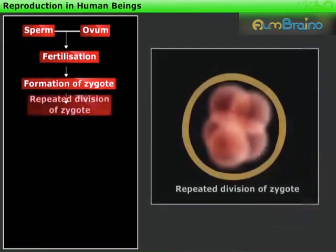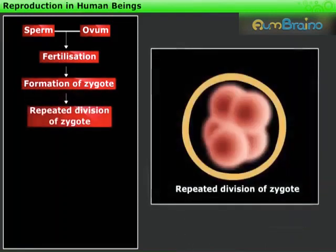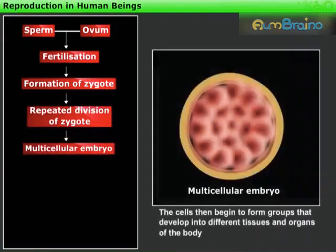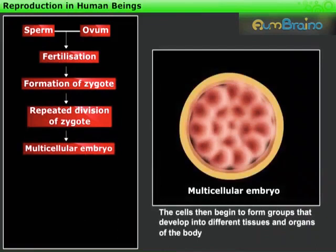It divides repeatedly to give rise to a ball of cells. The cells then begin to form groups that develop into different tissues and organs of the body. This developing structure is called an embryo.